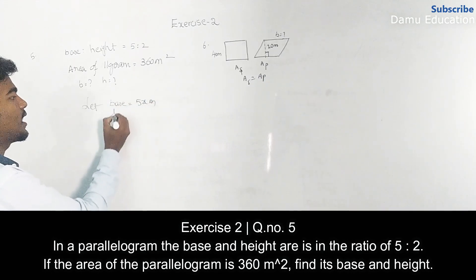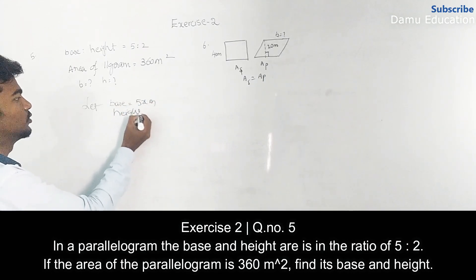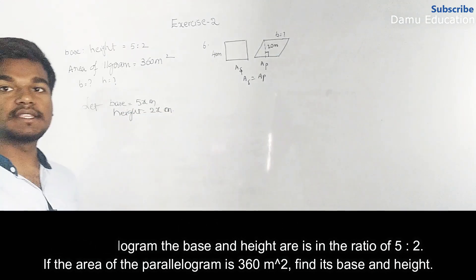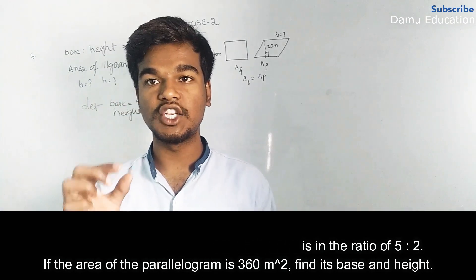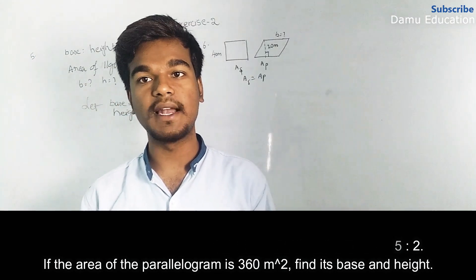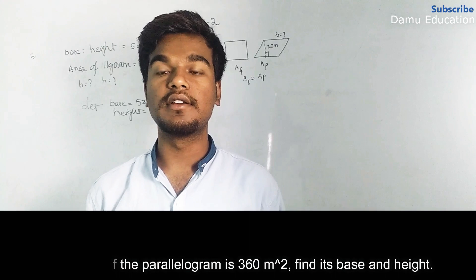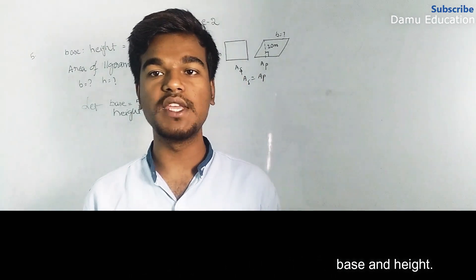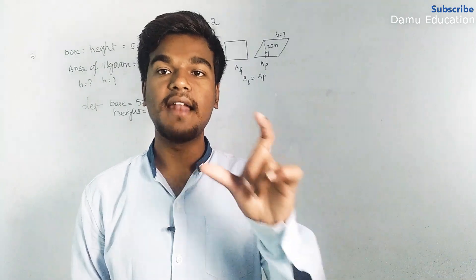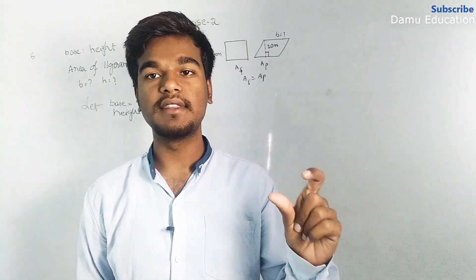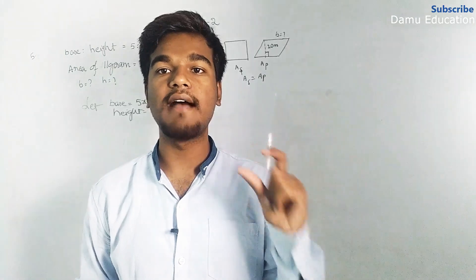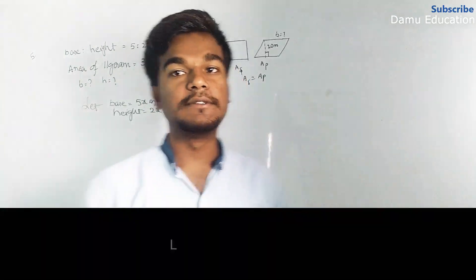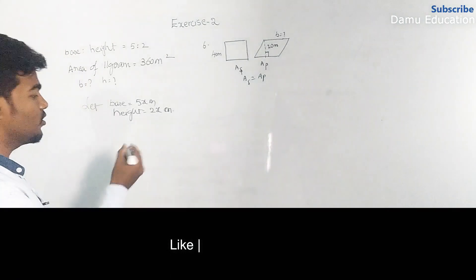We always take x when values are given in ratios — we multiply by x because x is the constant term. If you divide 5x by 2x, x cancels and you get 5:2. Whatever number you multiply, the ratio stays the same. All ratios must be multiplied by the same number or variable.